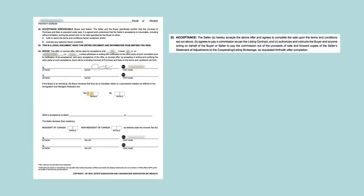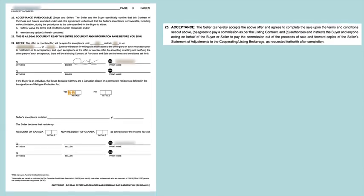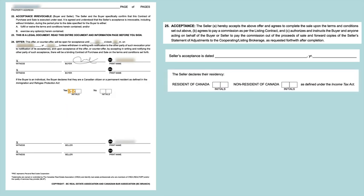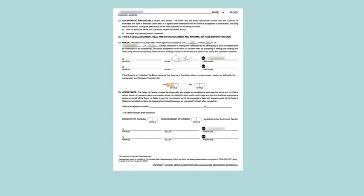Acceptance: This section is where the seller signs to acknowledge their acceptance of the terms of the contract. If there is a counteroffer made by the seller, a binding agreement will not be formed unless the buyer accepts the new terms. The contract should specify the date when an offer or counteroffer is accepted, as it confirms the date the deal is agreed to by both parties — this date is often used as a reference for terms determined by the date of acceptance, such as when the deposit becomes due. The seller must also specify their residency status under the Income Tax Act, as this determines whether certain withholdings and remittances need to be made by the buyer on closing if the seller is a non-resident of Canada.